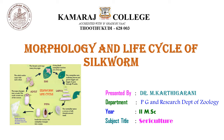Now we are going to see about the morphology and life cycle of silkworm. Sericulture is an agro-based industry. It involves rearing of silkworms for the production of raw silk, which is the yarn obtained out of cocoons spun by certain species of insects. Cultivation to feed the silkworms and reeling the cocoons to unwind the silk filament for value-added advantages like processes and weaving are the major activities of sericulture.